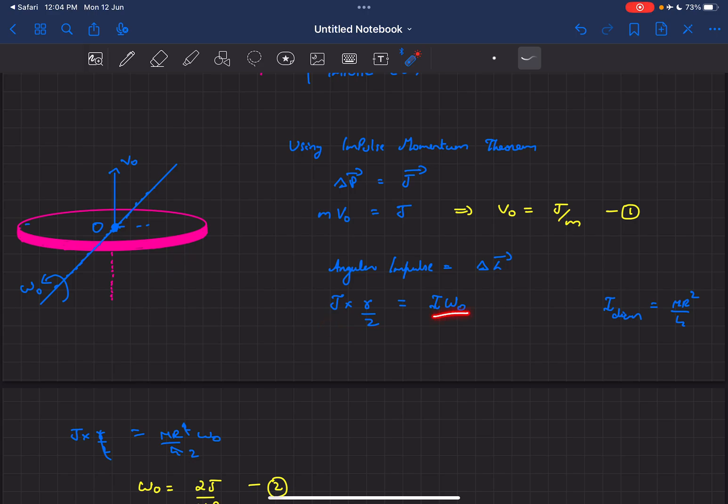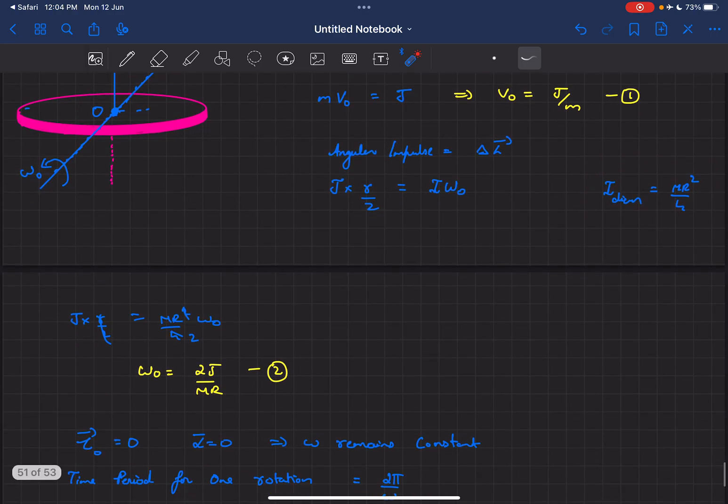And as the axis of rotation is passing through the diameter of the disk, the value of moment of inertia would be mr²/4. So once we substitute all those values in, we'll get the value of ω₀ as 2J/mr.